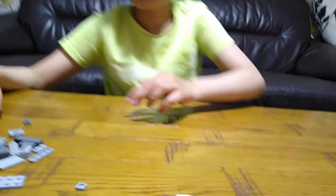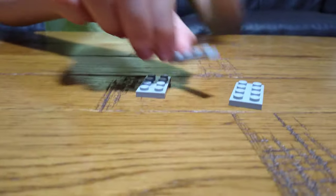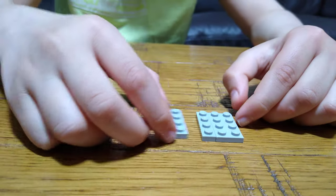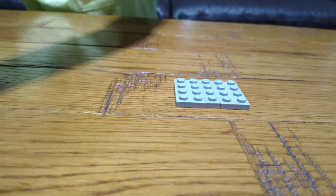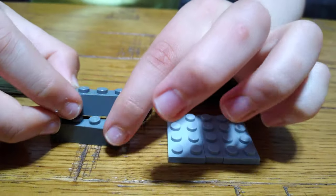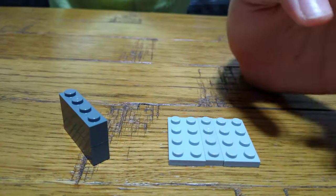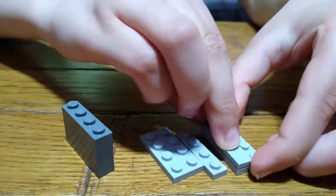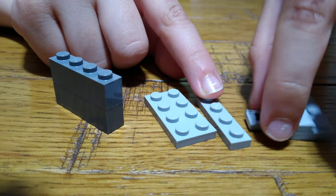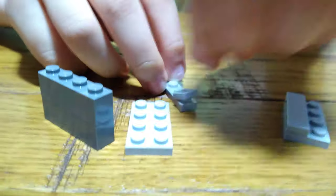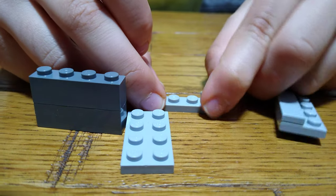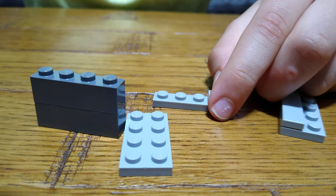So yeah, first you get two of these, one of these, one of that. Get two of these, put them on top of each other, put this here, and then you place this here like that. Then this. Place this onto here like that, and then place it here.